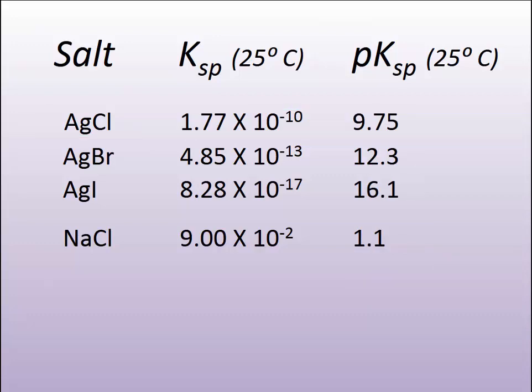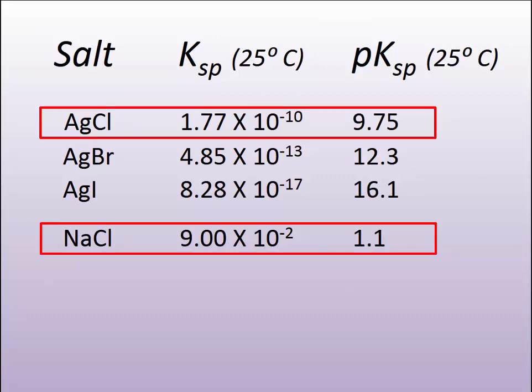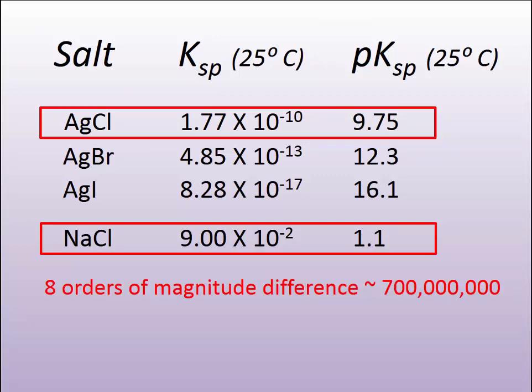So we see that between sodium chloride and silver chloride, there is an 8 order of magnitude difference. Each click of the number is a factor of 10.